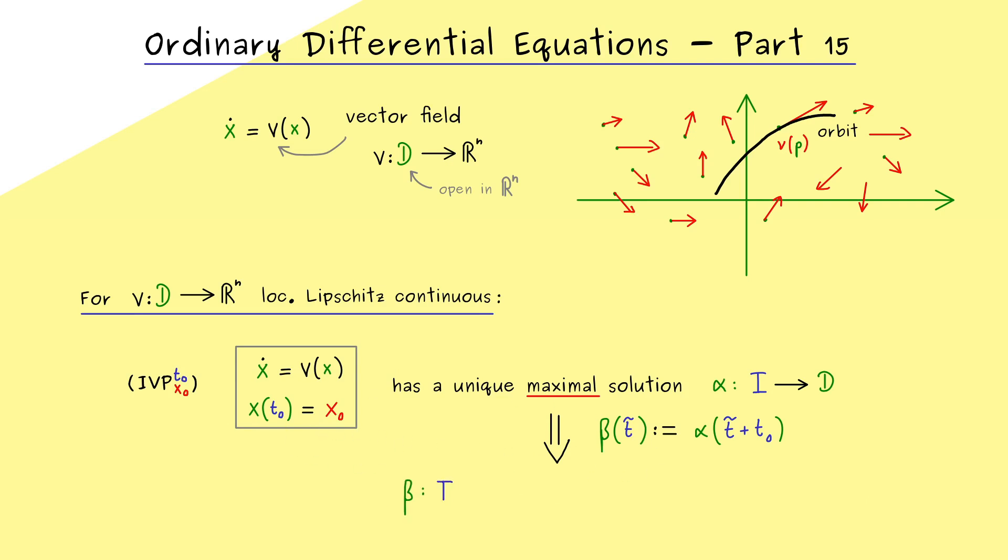Hence, the function beta, where the domain i is also simply translated, is also a maximal solution of an initial value problem. However, there the time starting point is set to 0. So in the end we see, shifting the time variable like that is not a big deal, we just change the maximal solution in that way.